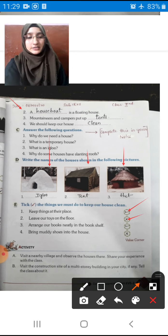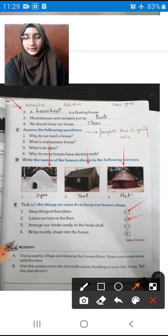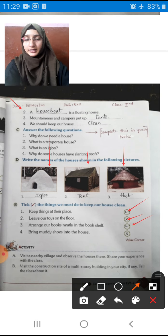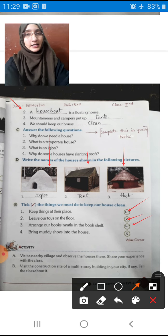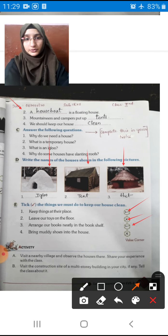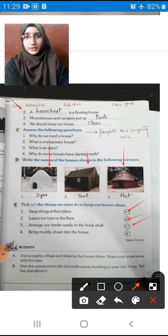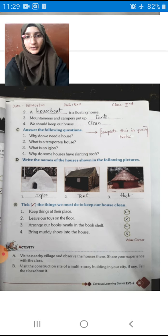Third one: Arrange our books neatly in the bookshelves. Books should be kept in the bookshelf. Yes, this is also correct. This also makes the house look clean. Fourth: Bring muddy shoes into the house. After playing outside, if we return to our house with muddy shoes, the floor will get spoiled. The whole room will become dirty. So what we have to do? We should not do this. So we have to put cross mark in the last one.